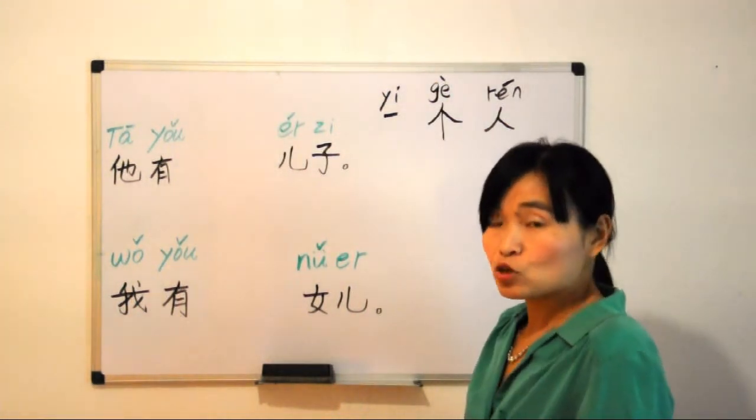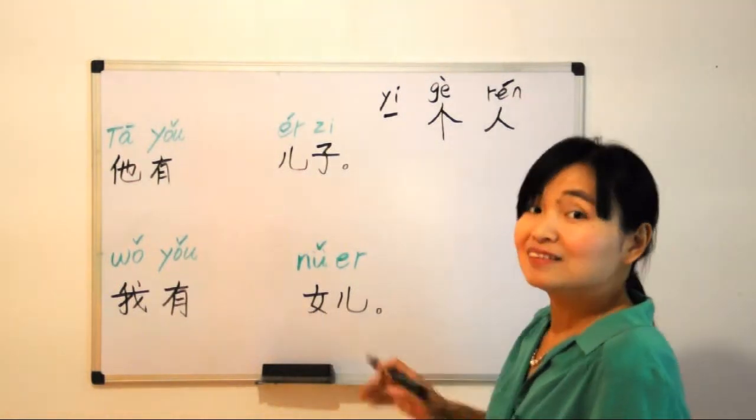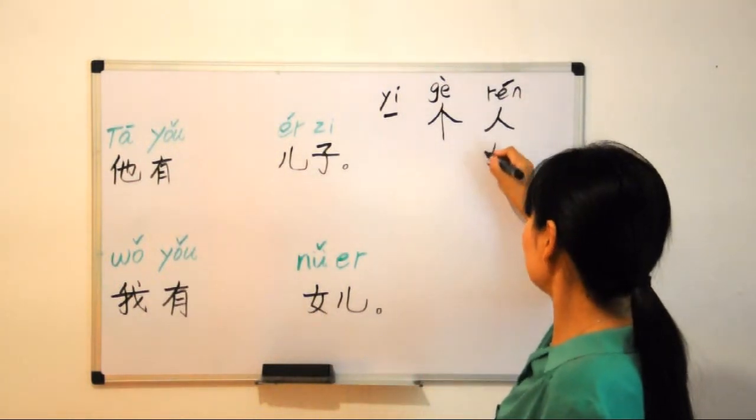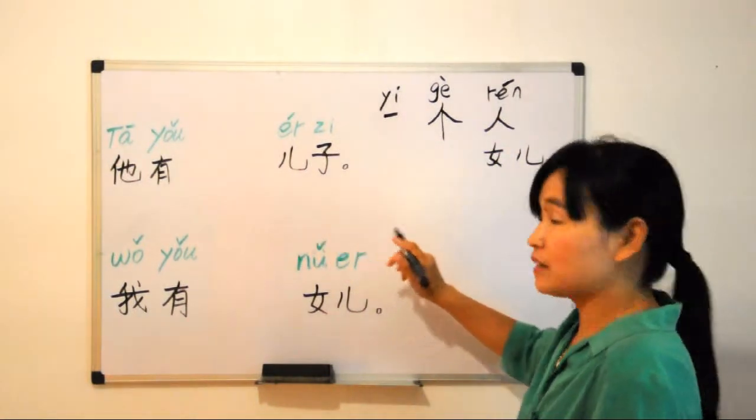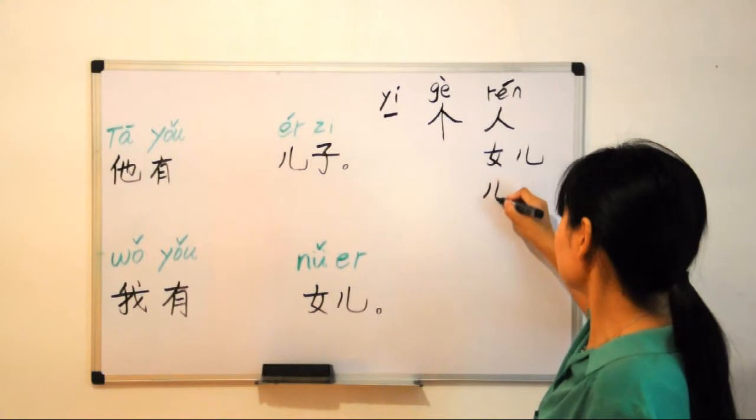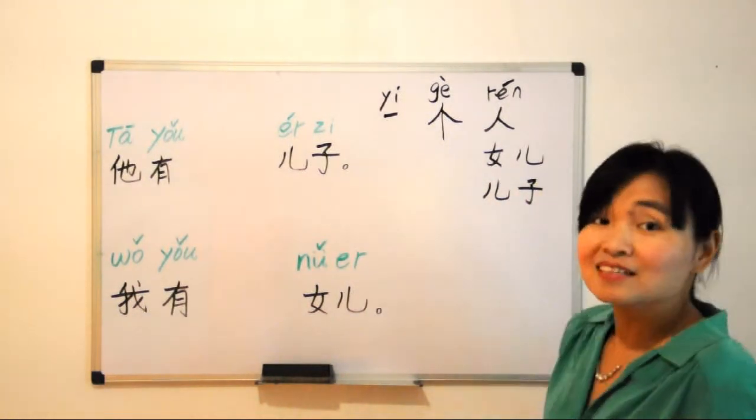So how to say one daughter? 女儿 (nǚ'ér), 一个女儿 (yí gè nǚ'ér). How about one son? 儿子 (érzi), son, right? 一个儿子 (yí gè érzi).